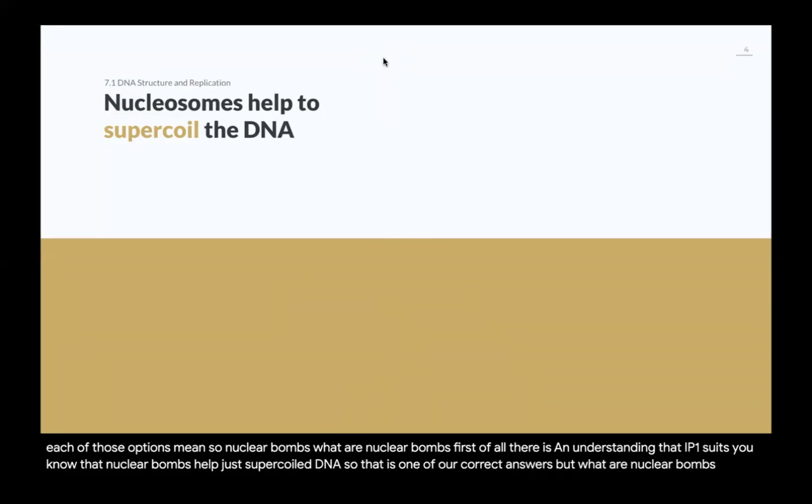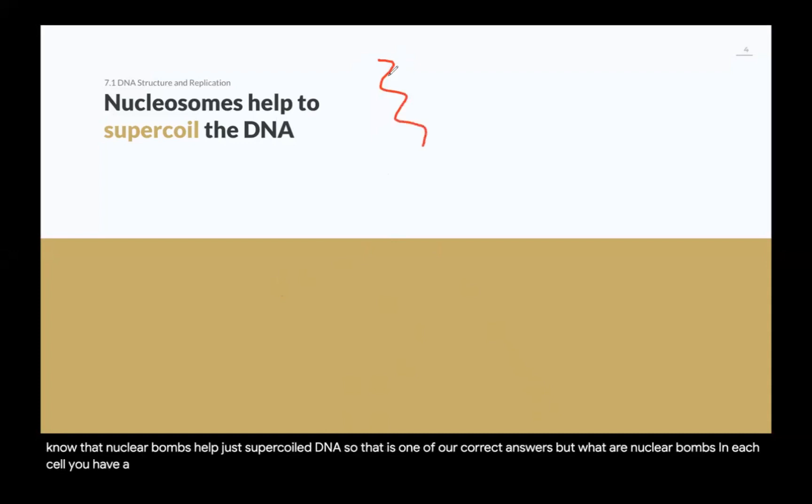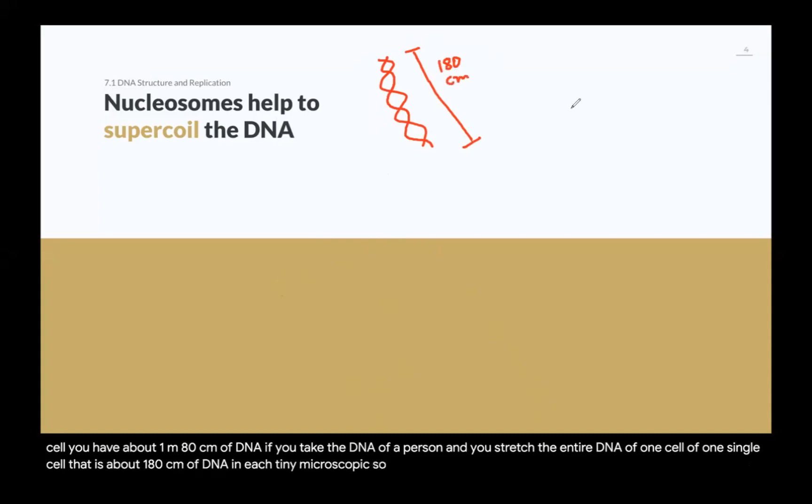The thing is, in each cell you have about 1 meter 80 centimeters of DNA. If you take the DNA of a person and you stretch it, the entire DNA of one single cell, that is about 180 centimeters of DNA in each tiny microscopic cell. So you've got to find a way to organize that and to pack all this DNA, not just floating in a tiny cell but inside the nucleus, inside a tiny cell.